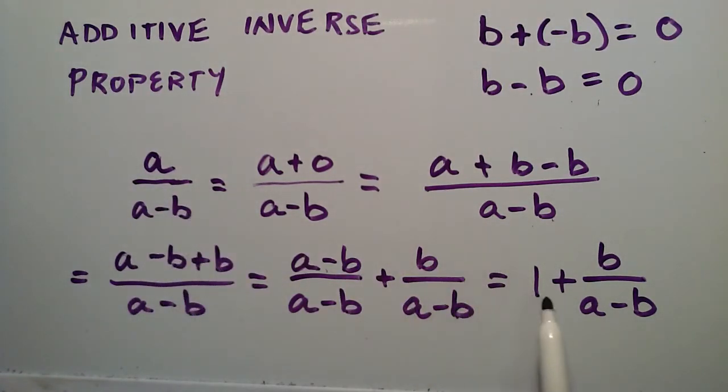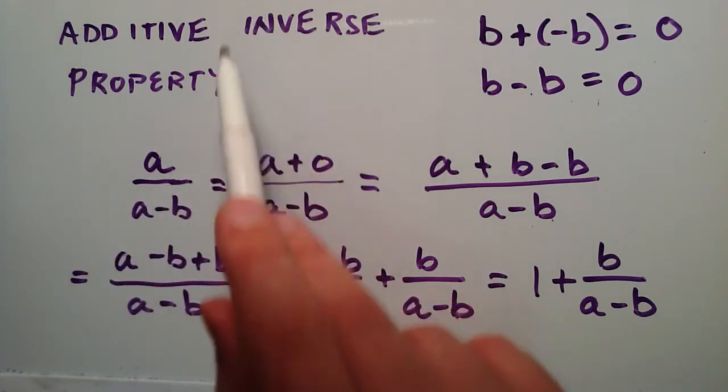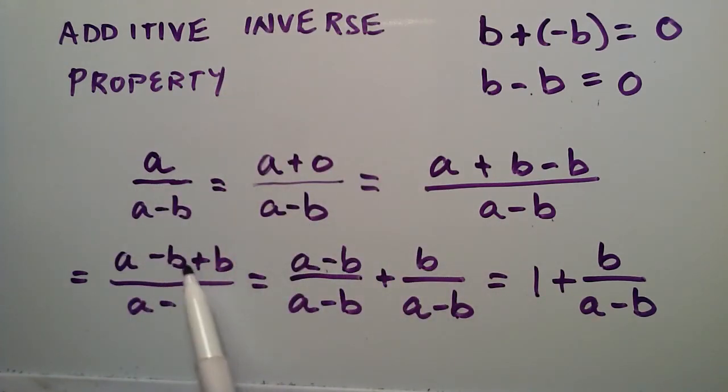and rewrite it in a different looking form. So basically by using these two properties and then just splitting up the numerators over top of the same common denominator here, we were able to show that a divided by a minus b is exactly the same thing as one plus b divided by a minus b.